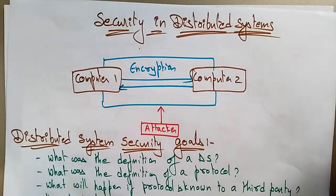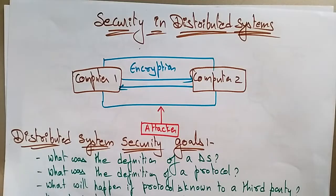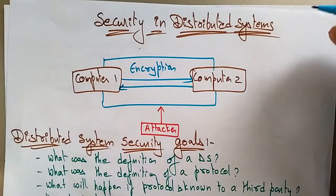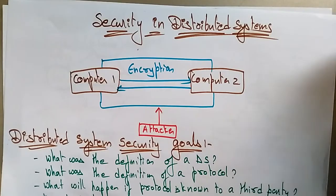Welcome back. The next topic in distributed systems is security. Whatever environment you are working in — centralized or distributed — if your systems are connected in a network, you need to provide security. Whatever data you are sending over the cloud, you need to maintain security. Let's see what types of security are used in distributed systems.